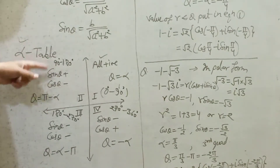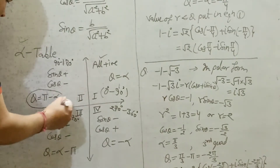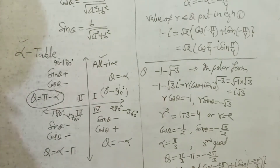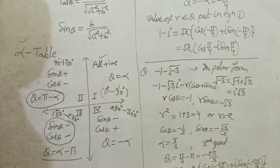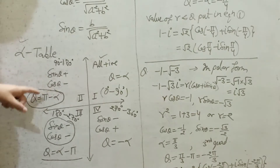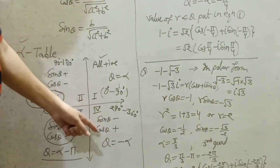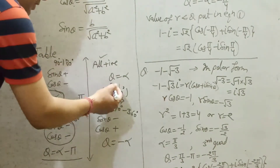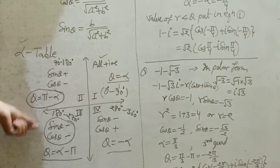If sin is positive and cos is negative, it is in the second quadrant, and theta equals pi minus alpha. If sin and cos are both negative, it is the third quadrant, and theta equals alpha minus pi. If sin is negative and cos is positive, it is the fourth quadrant, and theta equals minus alpha. So based on the quadrant you will calculate your theta.